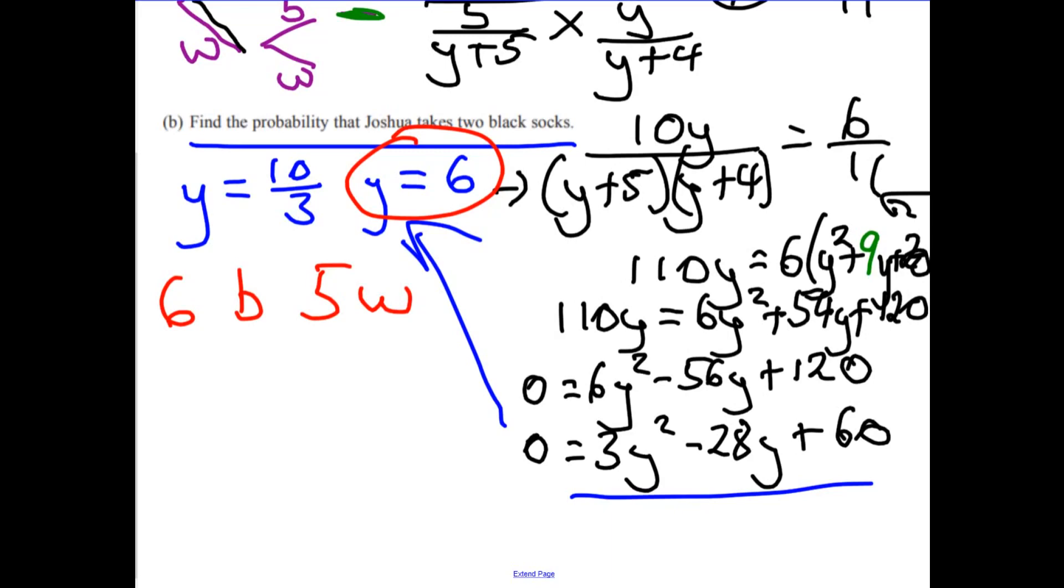Now the rest of the question should be quite easy because what's the chances of taking the first black sock? Well, it'll be 6 over 11, and then multiply that by another black sock. Well, there's one less and there's one less overall, so that's 30 over 110, which is, well, quite clearly both are divisible by 10, so 3 over 11.